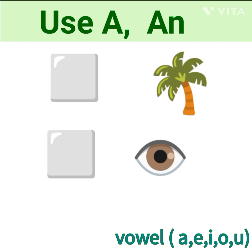Now look at this figure. Tree. The first letter of tree is T. T is consonant and a single object. So we use A.